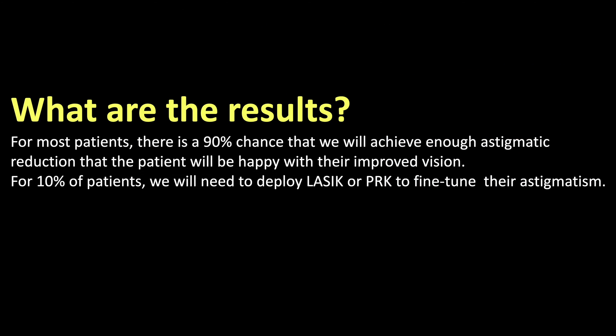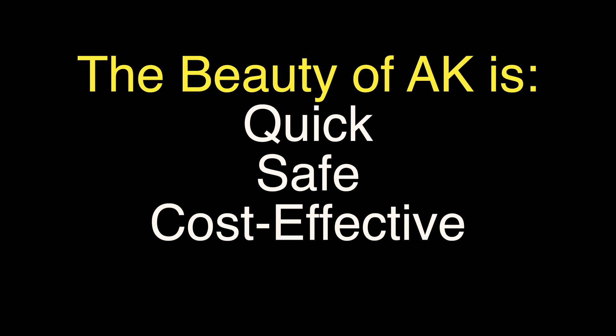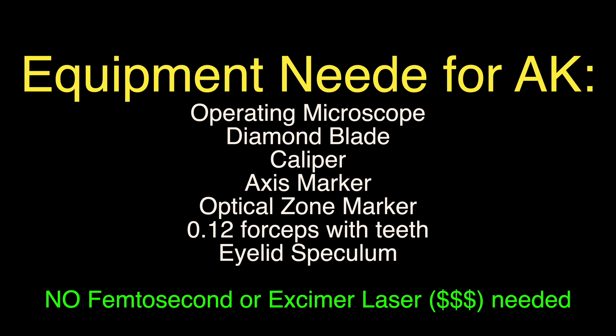So what are the results? For most patients, there's a 90% chance that we will achieve enough astigmatic reduction that the patient will be happy with their improved vision. For 10% of patients, we will need to deploy LASIK or PRK to fine-tune their astigmatism, as AK sometimes just doesn't work well enough. But the beauty of AK is that it is quick, safe, and cost-effective. The supplies needed are an operating microscope, diamond blade, caliper, axis marker, optical zone marker, 0.12 forceps with teeth, and an eyelid speculum. We don't need a femtosecond or excimer laser, which carry much greater costs for the patient and surgeon.